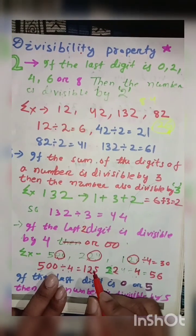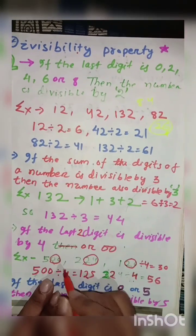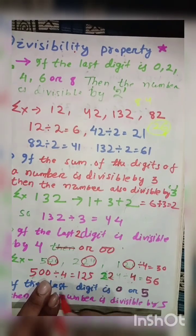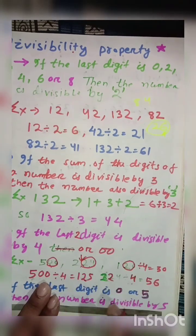In all numbers which have double 0 in the last 2 digits, or the last 2 digits are divisible by 4, then the original number is also divisible by 4. Are you clear?